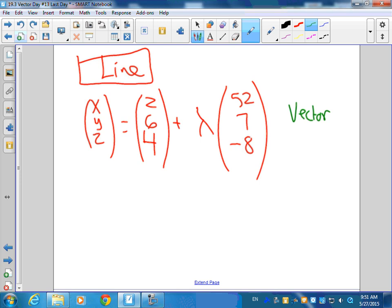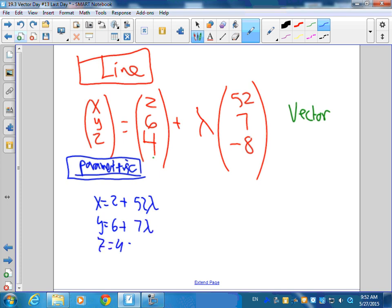This is what we call vector form. The vector form has vectors in it. This is my line. Any point on the line? Point plus step times direction. Now Cartesian was our favorite or I mean parametric was our favorite. How do we do that? We just break that down into x = 2 + 52λ and y = 6 + 7λ and z = 4 - 8λ.